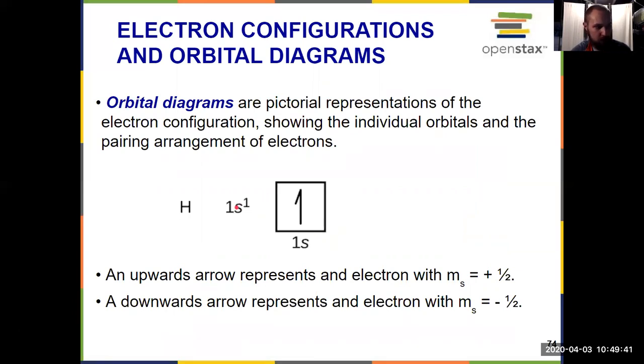So hydrogen we had before is just 1s¹. So I take the 1s, that has just one orbital, so it gets one box, which I label 1s. And because it has one electron, I put a single arrow in that.